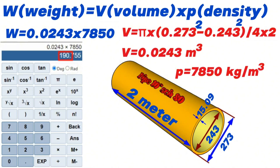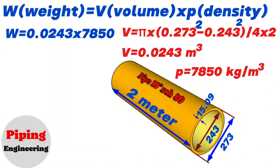So we calculated and found that the weight of the 10-inch pipe in our example equals 190 kg.